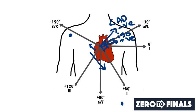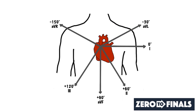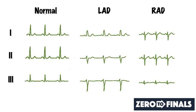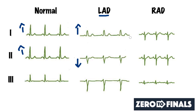Looking at this summary diagram: in a normal ECG, you end up with a positive lead one and a positive lead two. When you have left axis deviation, you get a positive lead one but a negative lead two. When you have right axis deviation, you have a negative lead one and usually a positive lead two — more isoelectric — and a positive lead three. Lead three doesn't need much attention for calculating the axis.